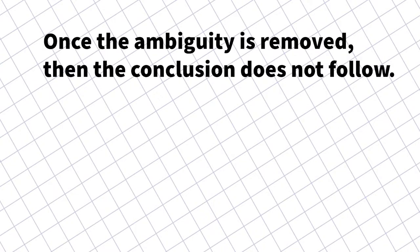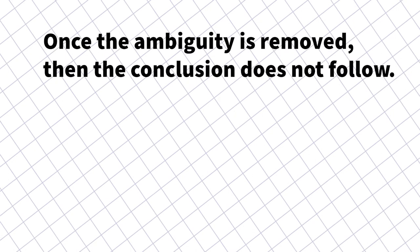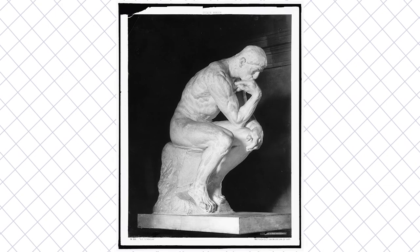But once the terms have been clarified and the ambiguous terms made clear, the conclusion does not follow from the premises. One way to understand the equivocation fallacy is that it occurs when three conditions are met. First, there's the ambiguity condition.